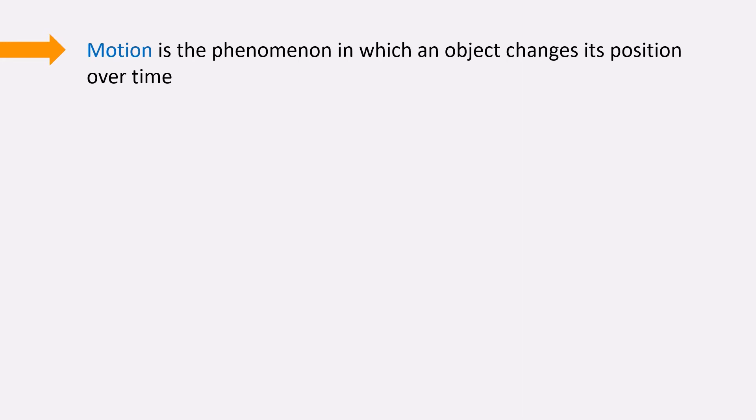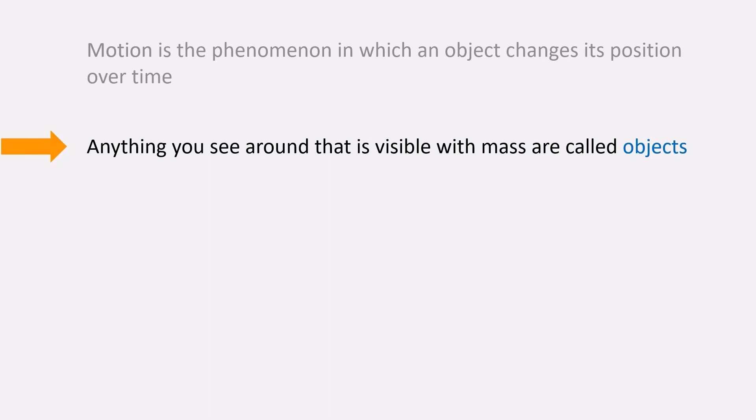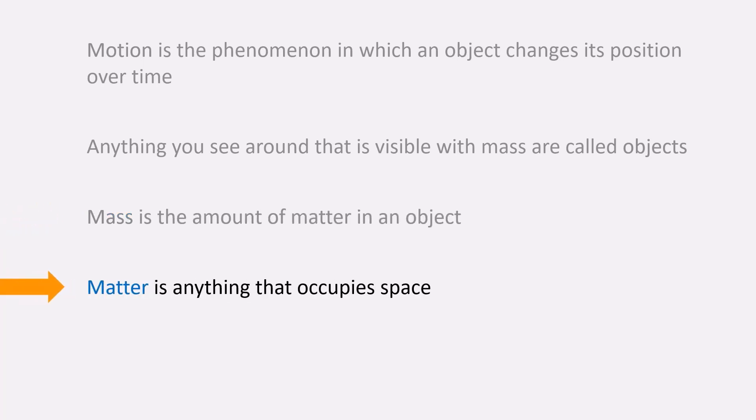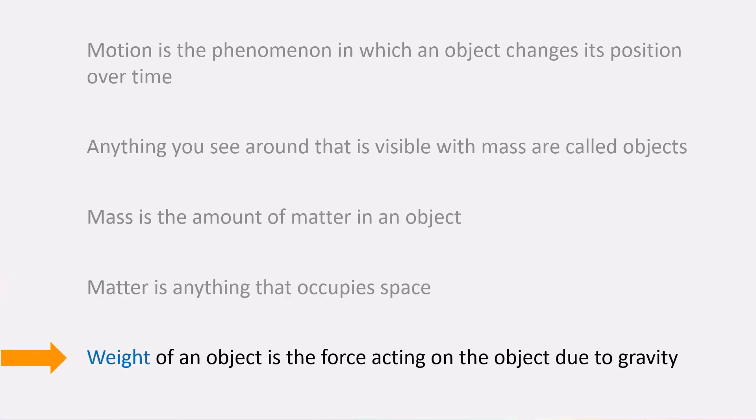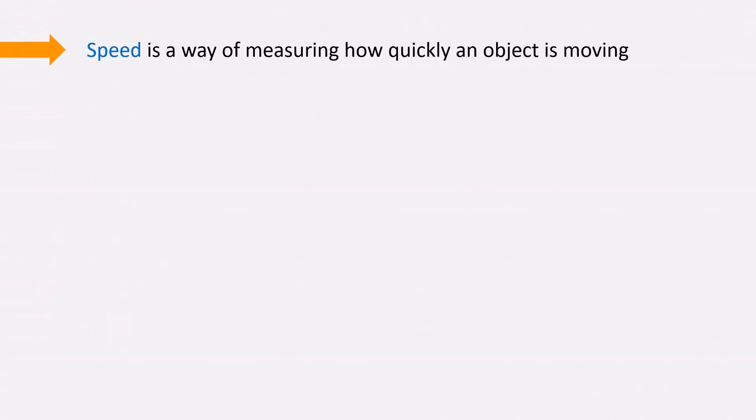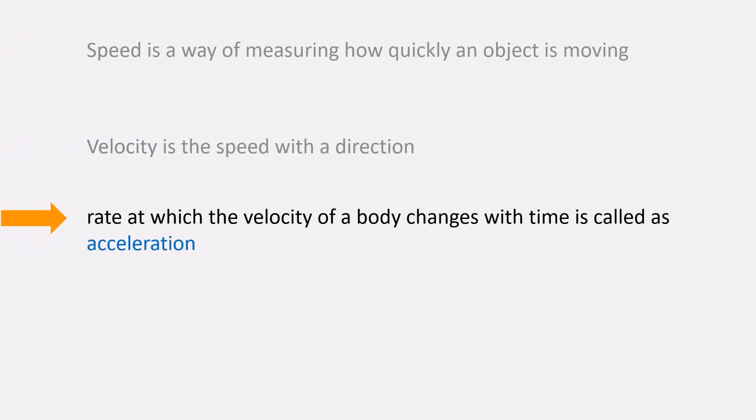The summary of what we have learned today is: motion is the phenomenon in which an object changes its position over time. Anything you see around that is visible with mass are called objects. Mass is a measurement of how much matter is in an object. Matter is anything that occupies space. The weight of an object is the force acting on the object due to gravity. Speed is a way of measuring how quickly an object is moving. Velocity is the speed with a direction. The rate at which the velocity of a body changes with time is called acceleration.